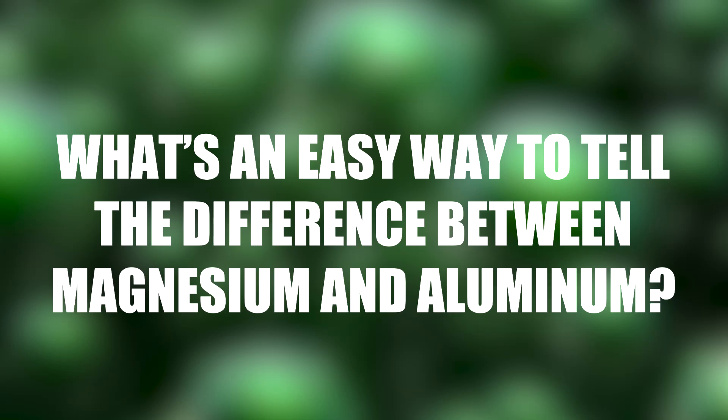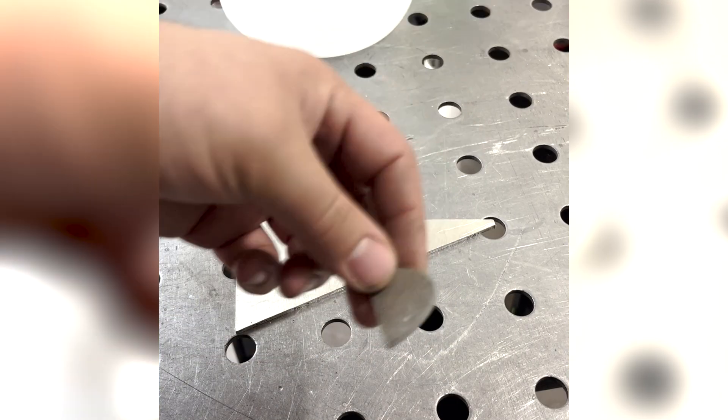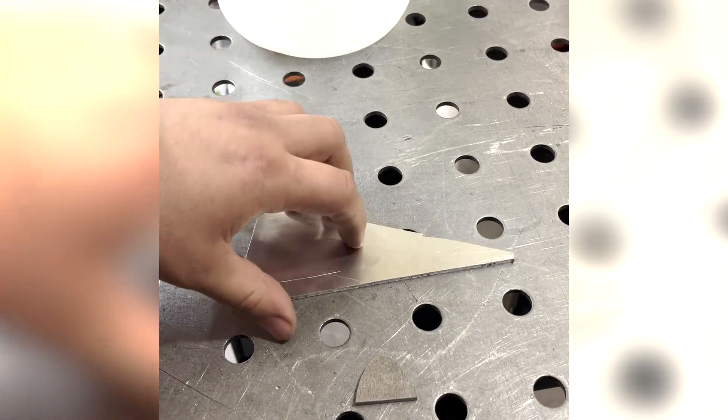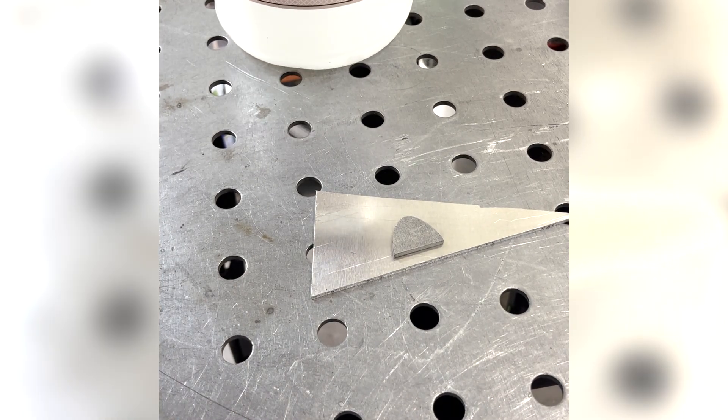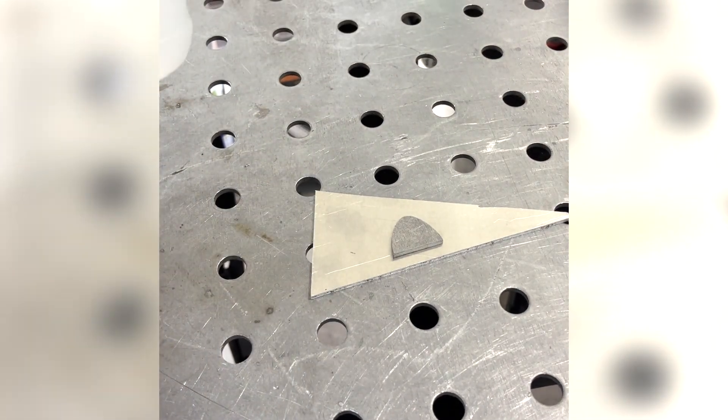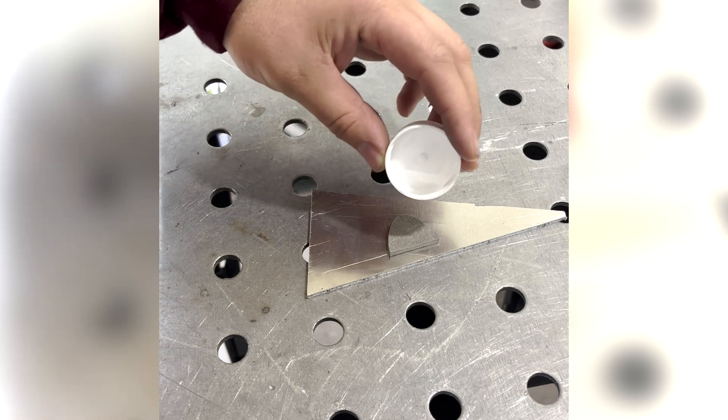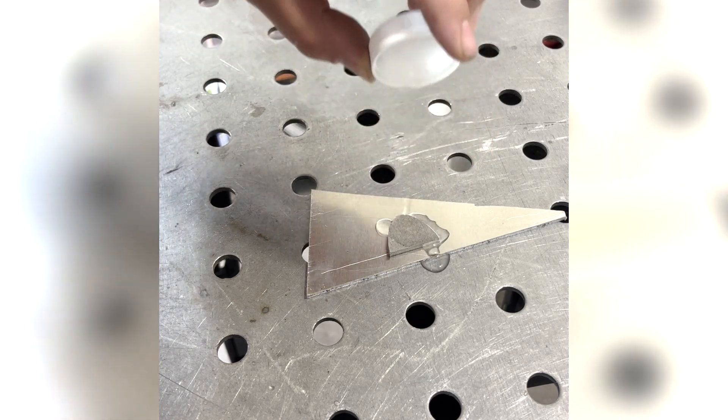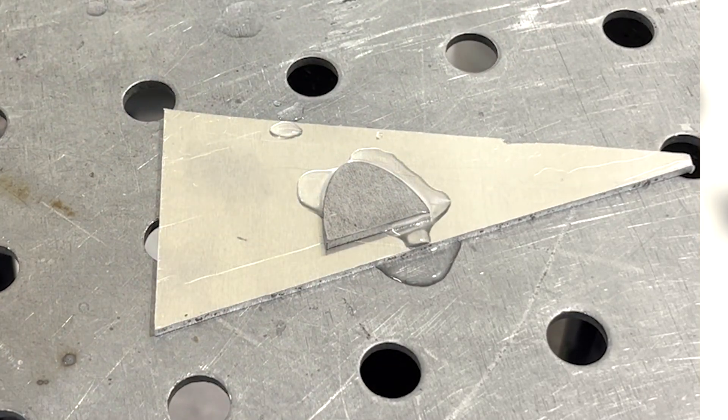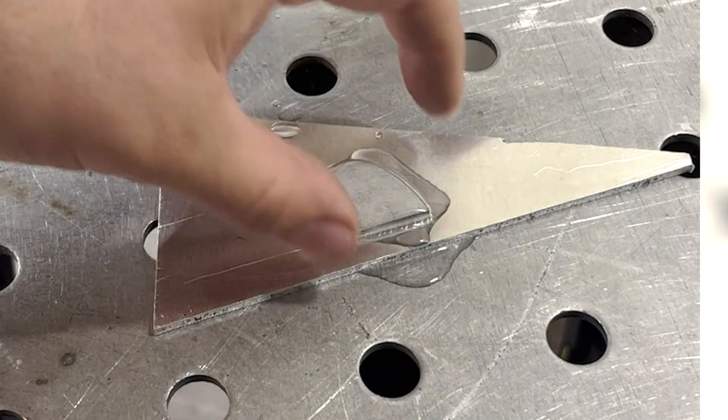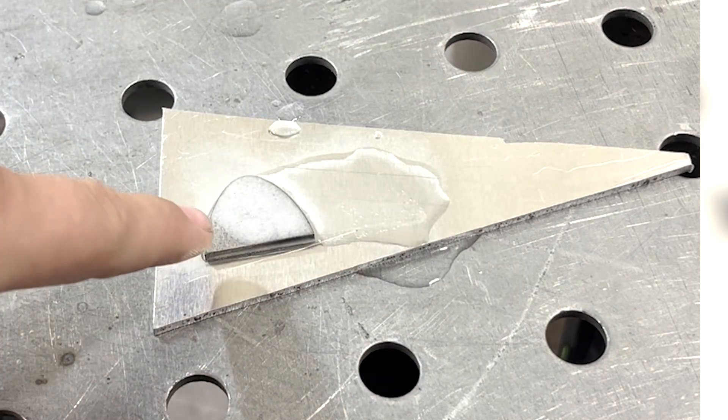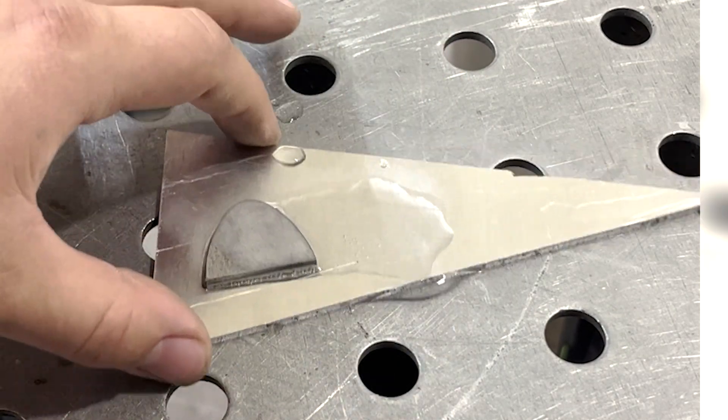A really simple way of telling if you've got mag or aluminum - first thing, you can almost tell the difference by the sound, but with some good old vinegar, you can see the mag is reacting and the aluminum is not.